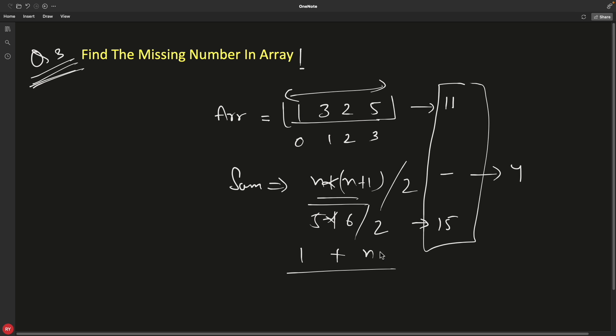This summation will add 1 to n all the numbers. If you add these and subtract with this result, then you will know the difference, which is the number that is missing. But the problem is n can be a very big number and this can overflow.